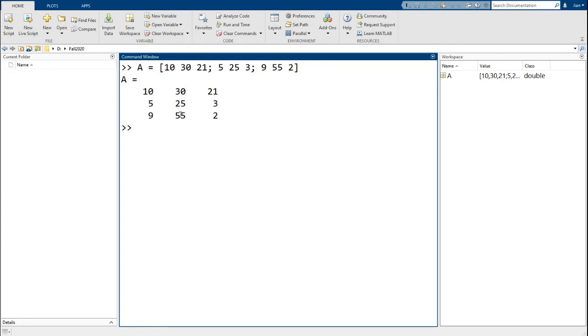Now let's select the element with the value of 55. So we can type in A, open parenthesis, 3, comma 2, close parenthesis. And we see that MATLAB returns the value of 55. Note that since we did not assign the output of the indexing operation to a variable, MATLAB has stored it in the variable ans.